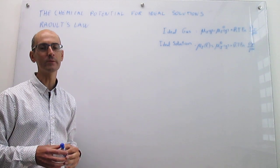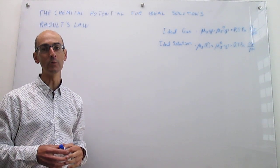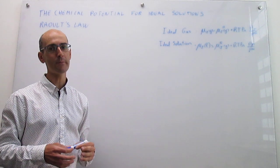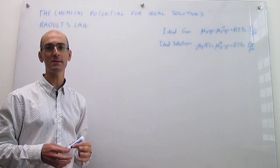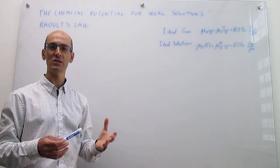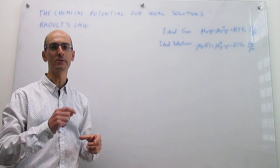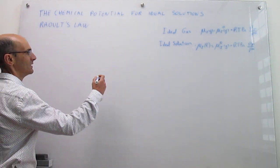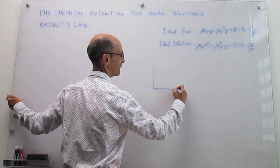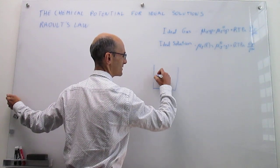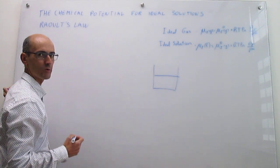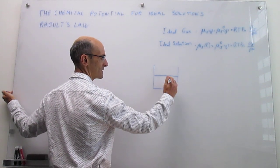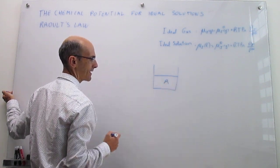This was about the 1880s or so, when Raoult was measuring how the vapor pressure of a substance changes when you add solutes to it. The idea here is that you're going to have some sort of liquid — this could be water, toluene, benzene, ethanol, whatever it is — we're going to call it A.